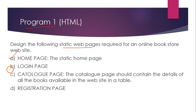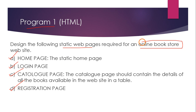We are going to create four pages: a home page, a login page, a catalog page, and a registration page. These four pages belong to an application called online bookstore, where you can see different books and their details, and if you want you can purchase them. In this program we are not going to implement the purchasing functionality — we are just going to create static pages which display some information.